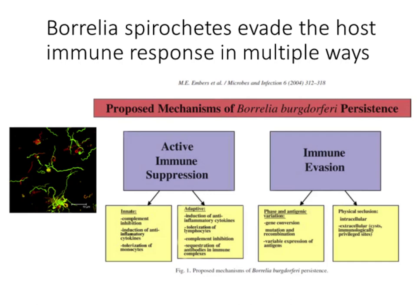Borrelia burgdorferi spirochetes evade the host immune response in many ways, and not only evade but actively suppress the immune response. In terms of immune evasion, they engage in phase and antigenic variation, expressing different combinations of lipoproteins that could be targets for the immune response, and they can become physically secluded in immunoprivileged sites. In terms of active immune suppression, they use many mechanisms to inhibit complement recognition, induce anti-inflammatory cytokines like IL-10, tolerate monocytes, and their lipoproteins can become sequestered in immune complexes and therefore non-recognizable by the host.